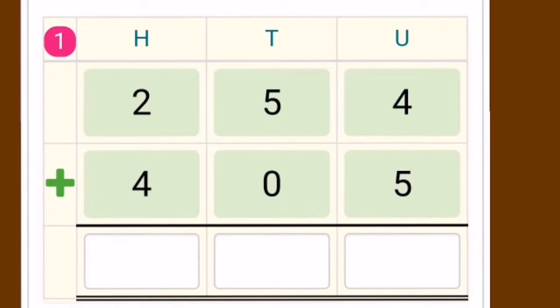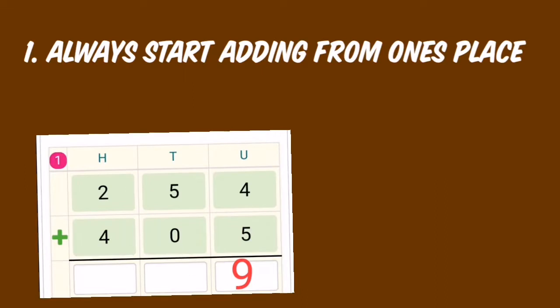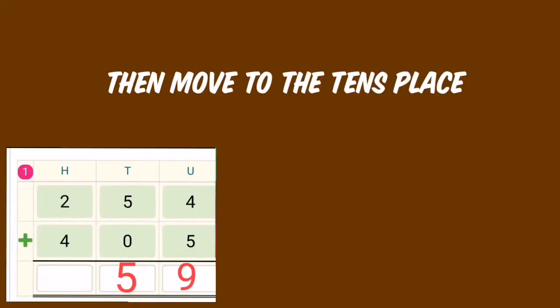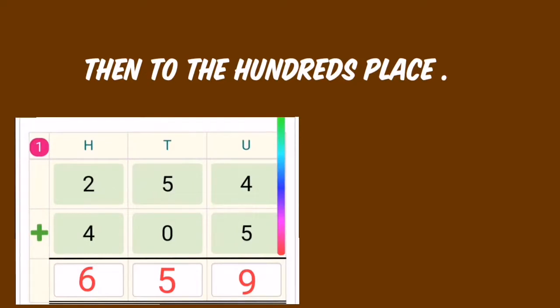Take the example of 254 plus 405. Doing addition, you should always start with the ones place. What is there in the ones place? 4 and 5, so 4 plus 5 is 9. Then move on to the tens place: 5 plus 0 is 5. Then go to the hundreds place: 2 plus 4 is 6.